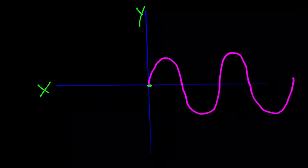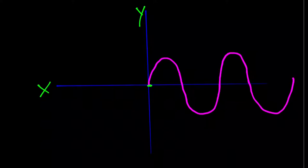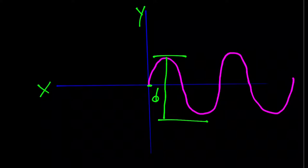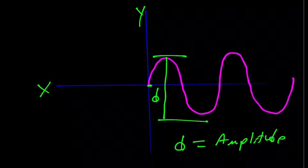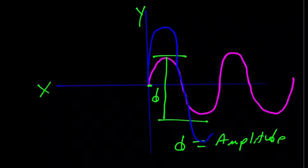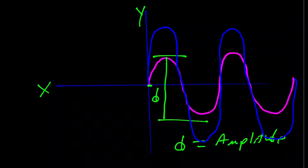Waves are sinusoidal in nature, oscillating from top to bottom — positive to negative. The distance from the top to the bottom is known as the amplitude. Waves can vary in height or amplitude; for example, a blue wave with a larger amplitude is greater than the original pink or red wave.